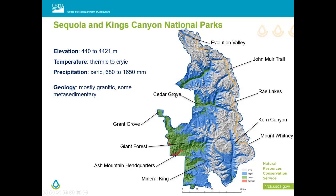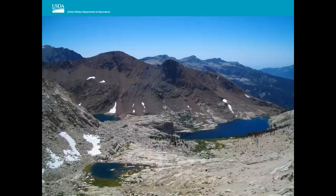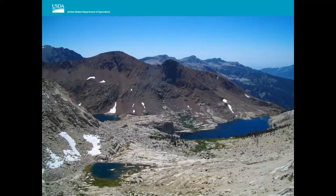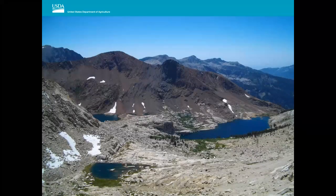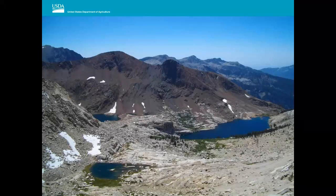Temperature goes from thermic to cryic. Precipitation spans quite a range but it's all xeric except for riparian and aquatic areas. The geology is mostly granitic with some metasedimentary rocks. The metasedimentary rocks are easy to distinguish when you work in a national park and there aren't too many trees in your way.